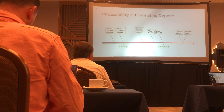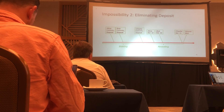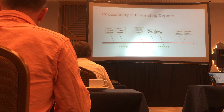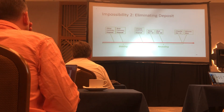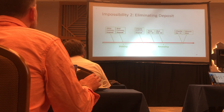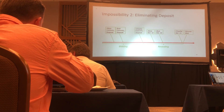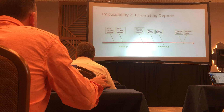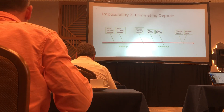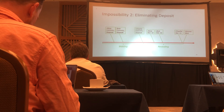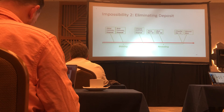Impossibility two is eliminating the deposit. If we don't have the deposit, how can we force the winner to actually pay? This is especially a big problem in blockchain because the winner is just some random string — we never know who they are and cannot use legal means to force payment. That's why we have to have a deposit.